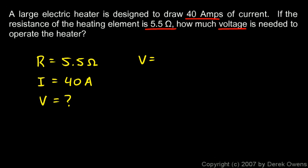So we just use the equation in this form, V equals IR. So it's just a simple multiplication, 40 amps times 5.5 ohms. And it comes out to 220 volts. That's our answer.